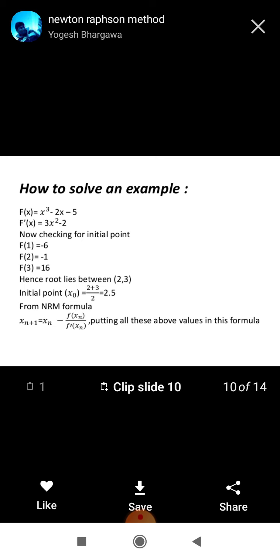It is because at the value of 2, it gives negative. At the value of 3, it gives positive. It means root lies between 2 and 3. So, initial point is the average of this, 2.5.